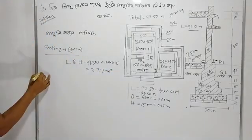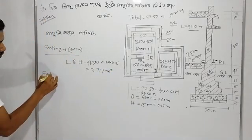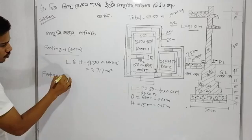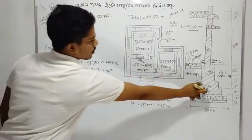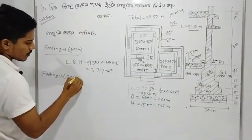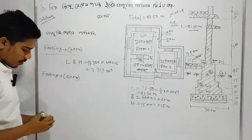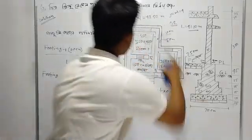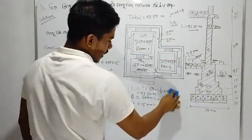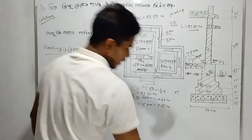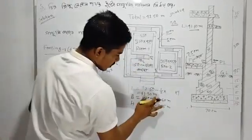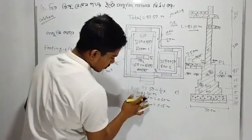Footing 2, footing 2 size — footing 2 is 5 cm, total length is 0.5 cm.